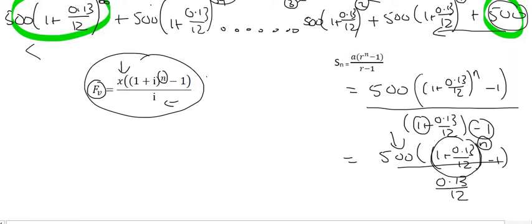So we use the sum formula for a geometric sequence, which takes on the following form, and we just call it FV to represent the future value of the investment.